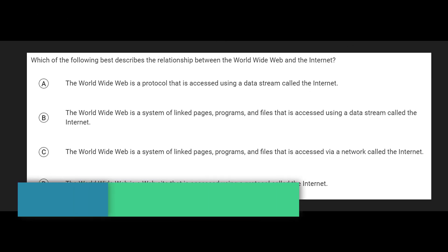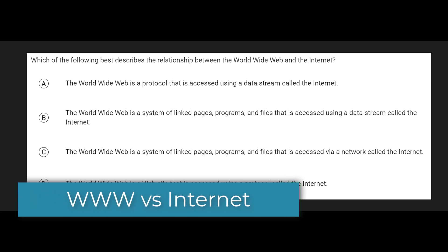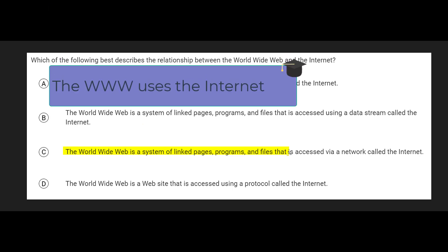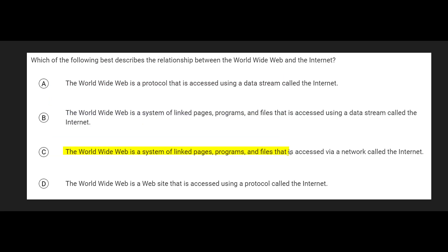This question asks about the difference between the World Wide Web and the Internet. They sound like the same topic, but they're actually very different concepts. The World Wide Web is a system of linked pages, programs, and files, and it is accessed through the Internet. So the World Wide Web uses the Internet, not the other way around. You might be more familiar with the World Wide Web as www — a bunch of websites on what you call the Internet.